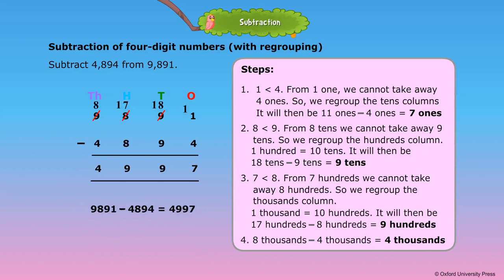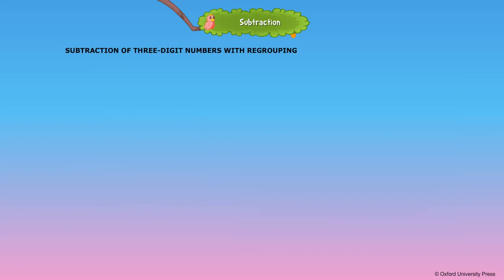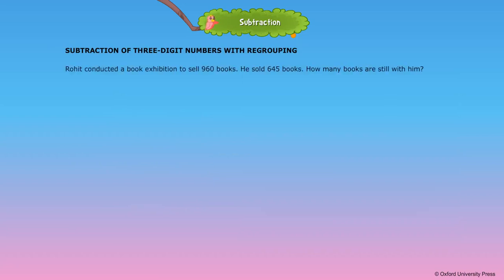9,891 minus 4,894 is equal to 4,997. Subtraction of 3-digit numbers with regrouping. Rohit conducted a book exhibition to sell 960 books. He sold 645 books. How many books are still with him?